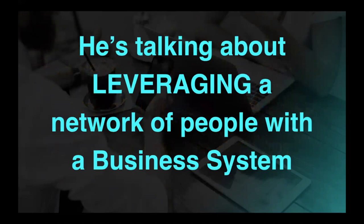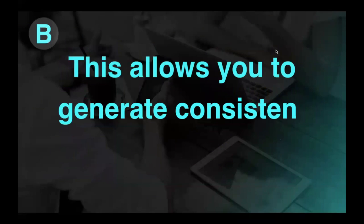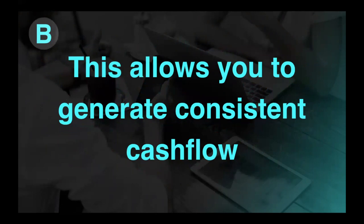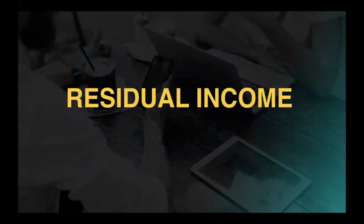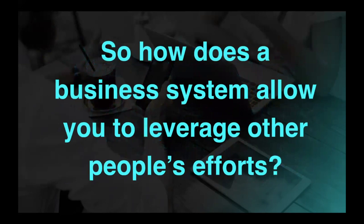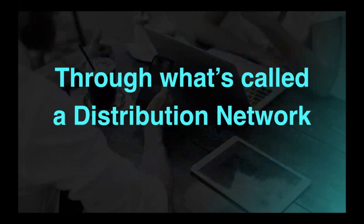He's talking about leveraging a network of people with the business system. A business system allows you to leverage other people's efforts instead of just your own. This allows you to generate consistent cash flow without having to continue trading your time in order to generate that income. Now, what we're talking about is residual income that comes in month after month. So how does a business system allow you to leverage other people's efforts?